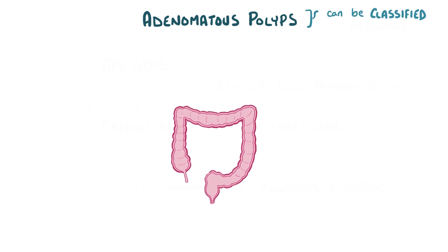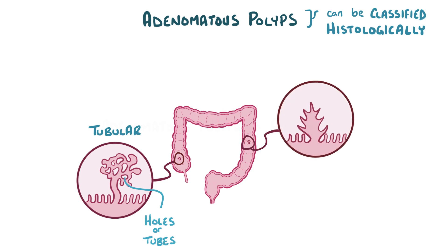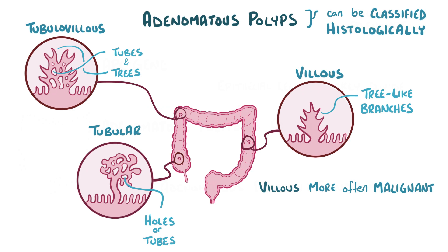Adenomatous polyps can also be classified histologically based on their growth pattern: as being tubular, where the growth has little holes in it when looking at a cross section of the tissue — or a tube if you imagine it in three dimensions — as well as villous, where the growth looks like a little tree with branches. Some adenomatous polyps look like a mix of the two, with tubes and tree-like structures, and are called tubulovillous. A growth with a more villous growth pattern is more likely to become malignant, and therefore needs more frequent monitoring if it isn't surgically removed.